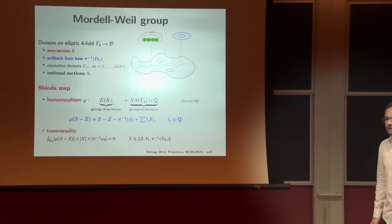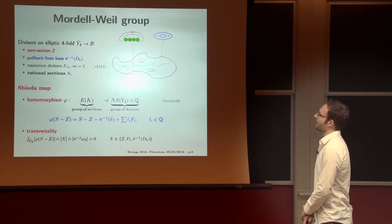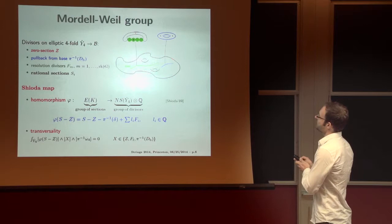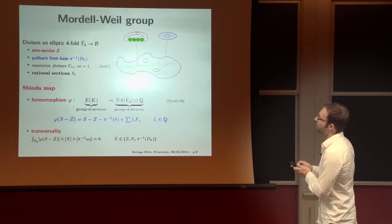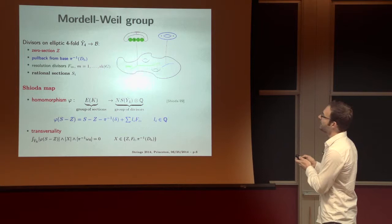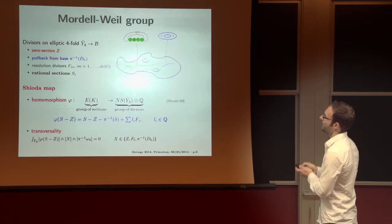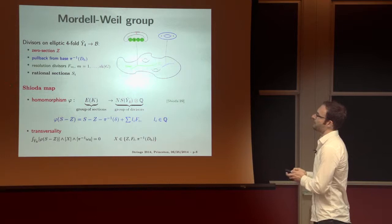So in order to understand this Mordell-Weil group in more detail, we need to recall a few key features about the geometry of our elliptic fibration, of our elliptic fourfold. In particular, the set of divisors or the group of divisors on such an elliptic fourfold. It is given first by the zero section. I'm assuming a zero section now for simplicity. So this is a copy of the base with one point per fiber. We have the divisors that are pulled back from the base. So the divisors are here and which wraps the entire fiber. We have furthermore resolution divisors. These are the P1 fibrations which we get when we resolve the non-abelian singularity in the fiber over a stack of 7-branes, which would comprise the non-abelian gauge group. And for every gauge group, we have rank of that gauge group many of those resolution divisors, P1 fibers. And we have extra sections, extra rational sections of the type just discussed.